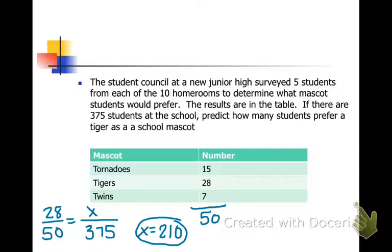Another way to do it is to change 28 over 50 into a percentage. This represents 56%. So if we take 56% of the 375, 56% of 375.